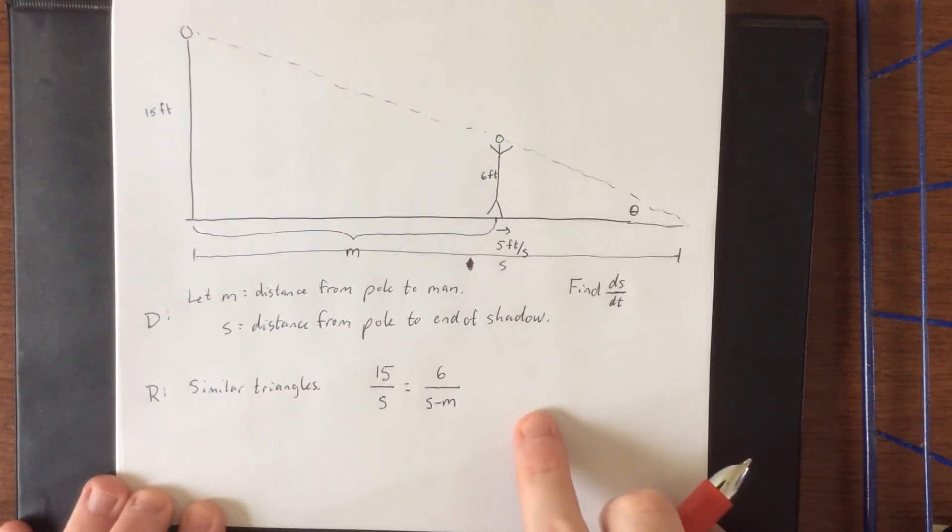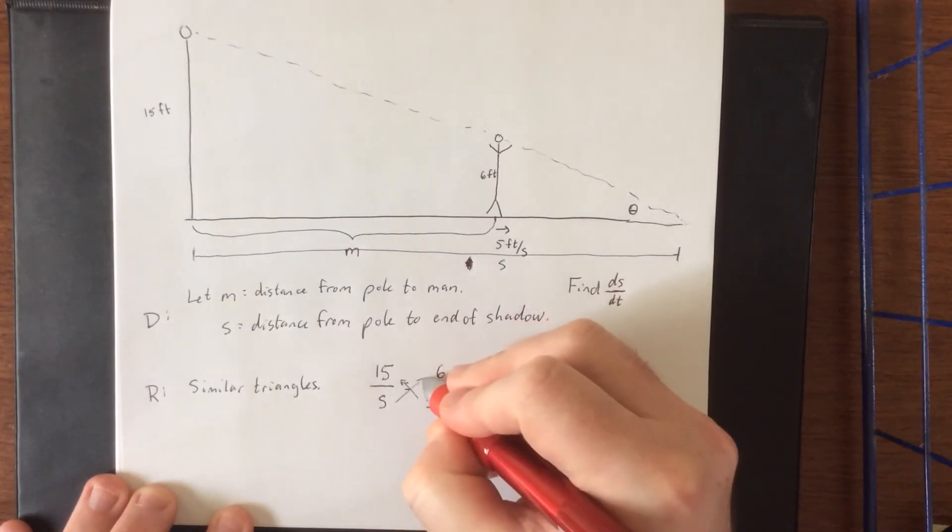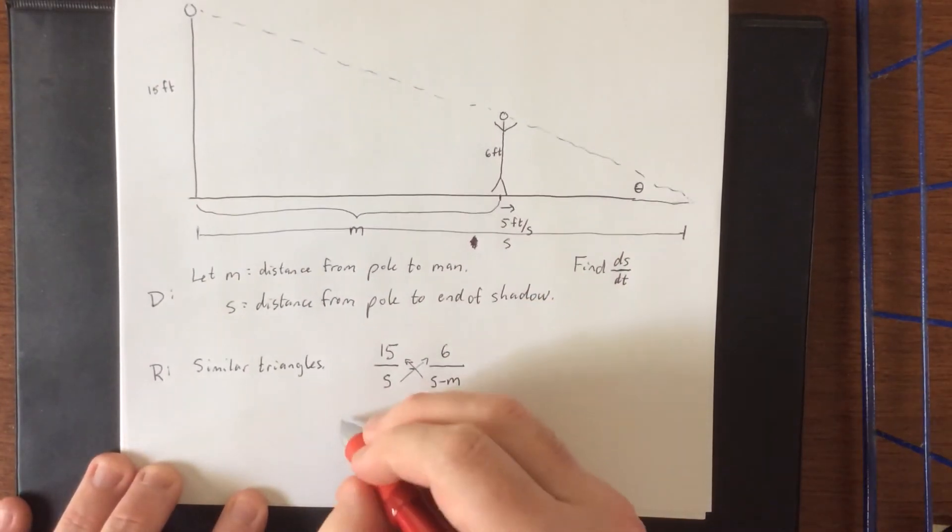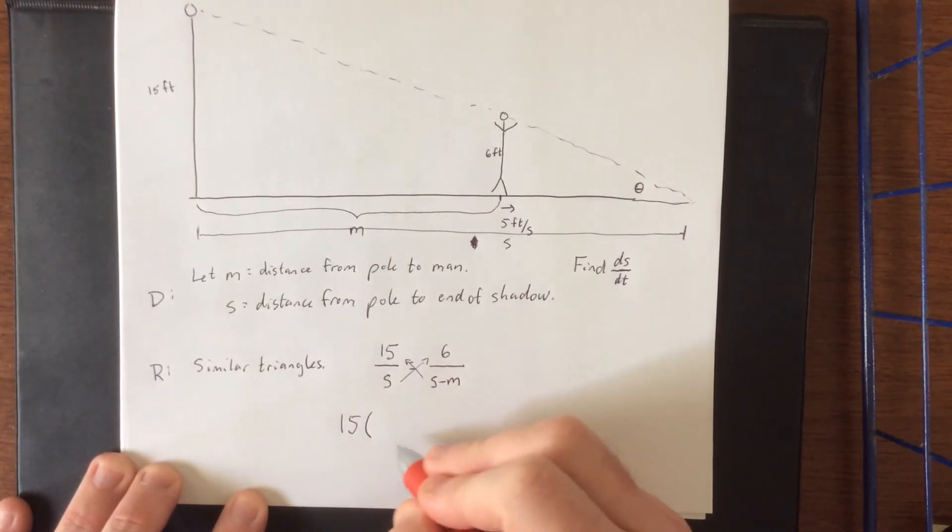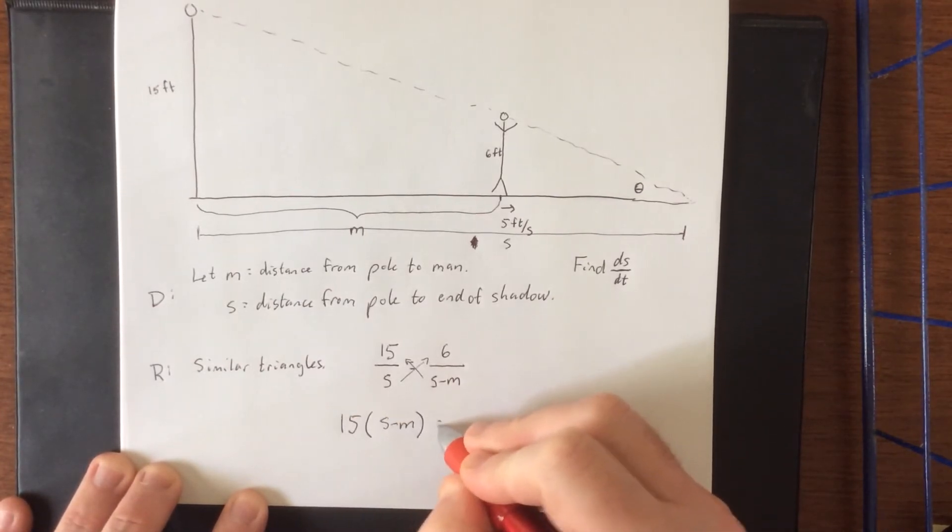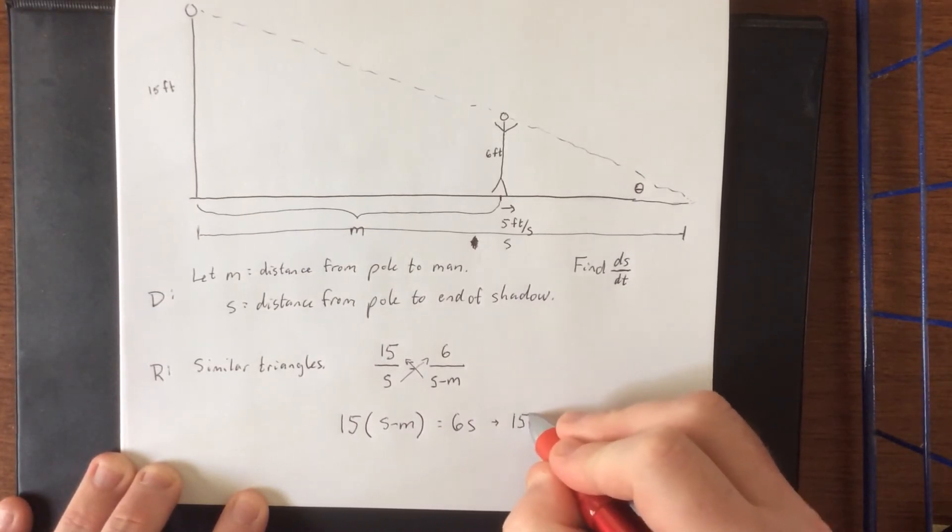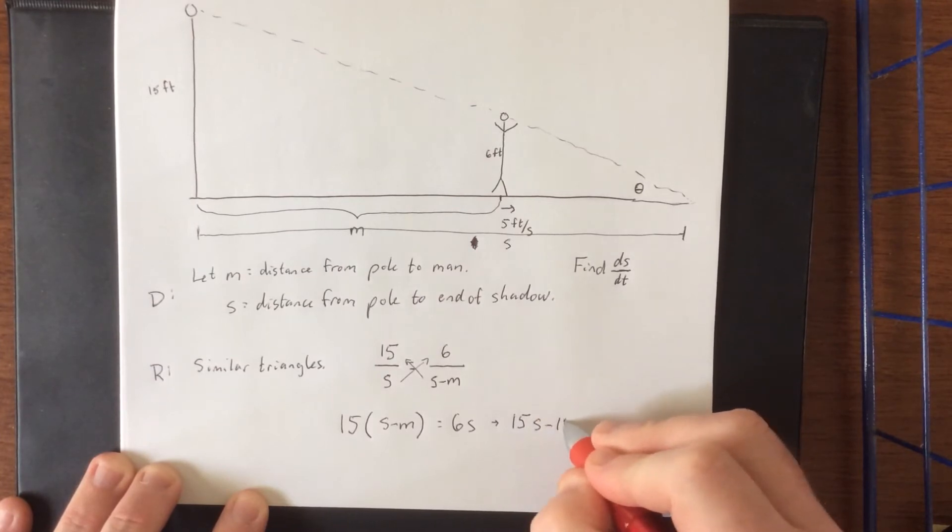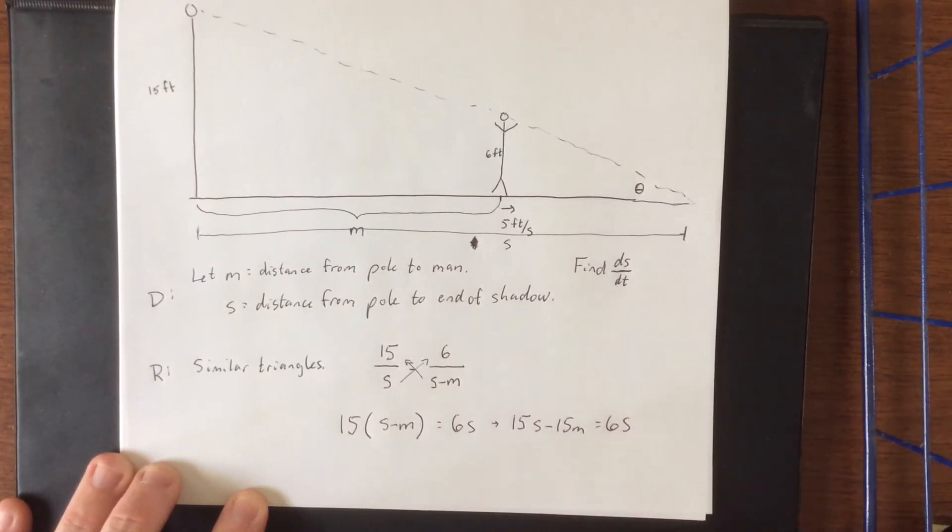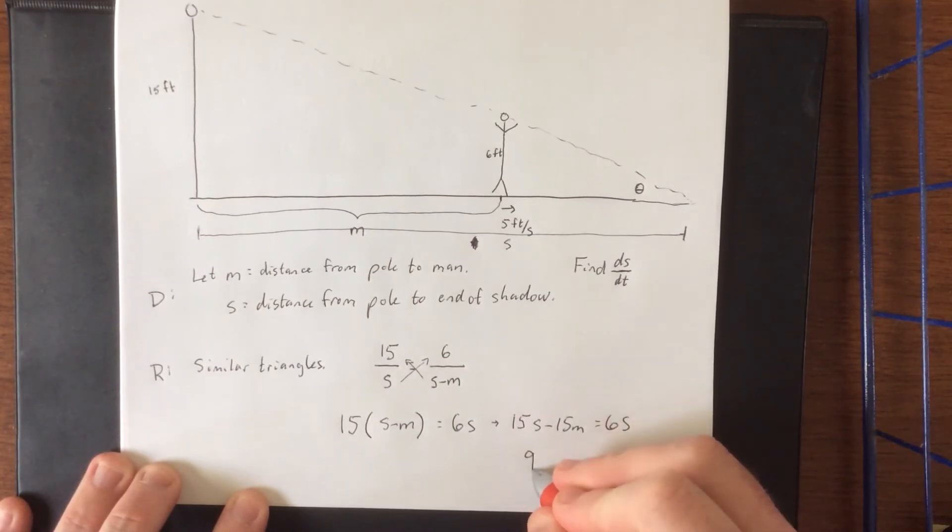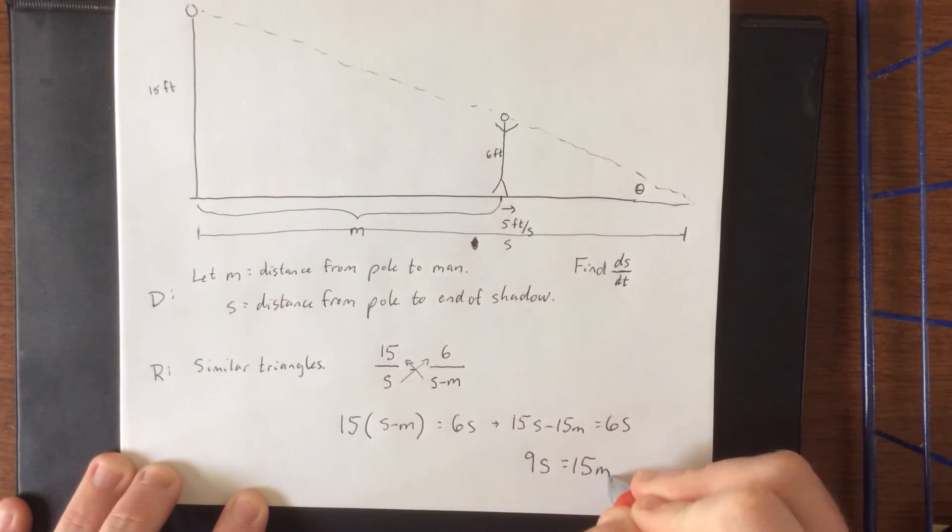Now if you want to, you can go ahead and differentiate this thing right now, no penalty whatsoever. However, we're going to be using some quotient rule in here and that just sounds awful. So what I'd like to do instead is to perform a cross multiplication. Product of the means equals product of the extremes. So we'll say that 15 times (S minus M) is going to be equal to 6S. And continuing to manipulate this, this will be 15S minus 15M is equal to 6S. And if I subtract 6S and add 15M to both sides, I will get 9S is equal to 15M.